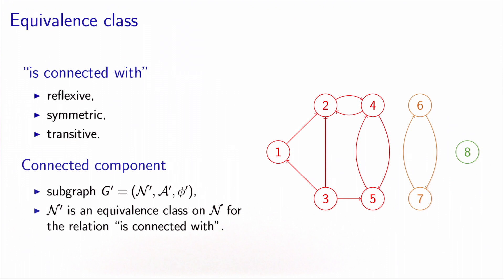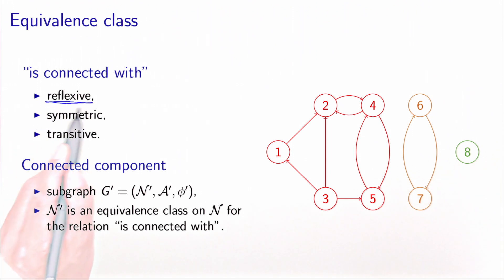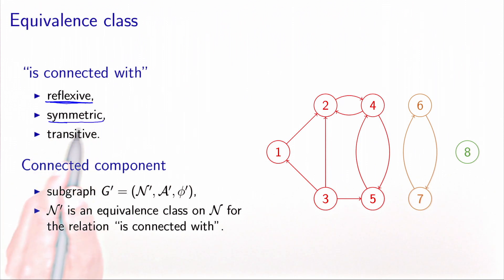The relation defined by isConnectedWith defines an equivalence class. Indeed, it is reflexive, symmetric, and transitive. Reflexive: we assume that a node is connected with itself, which makes sense. Symmetric is valid for the definition of simple connectivity.